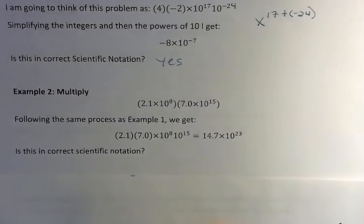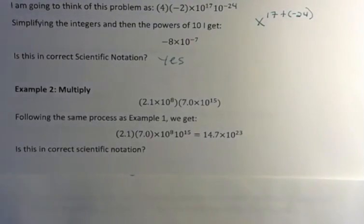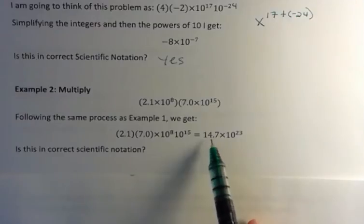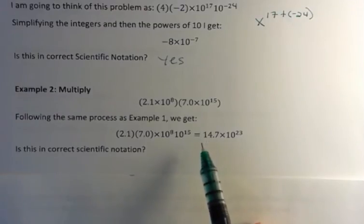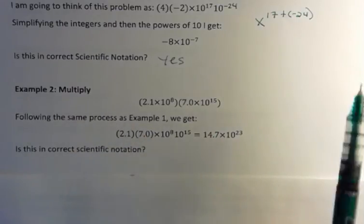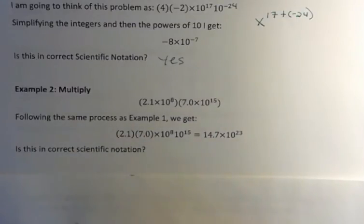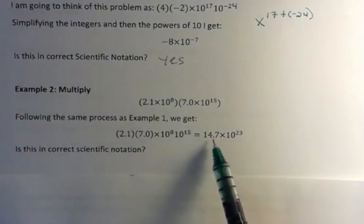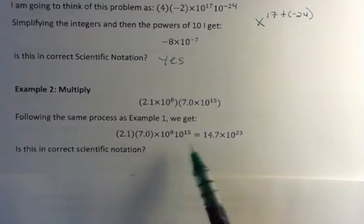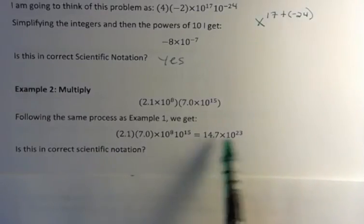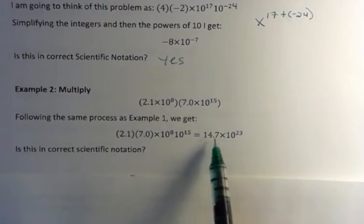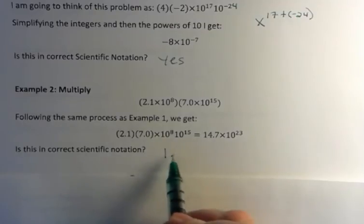And what you should be saying is no, because this number is greater than 10, and the number that we end up with here has to be between 1 and 10. But in performing operations, many times we get something that's not, and so then we want to go back and correct it.